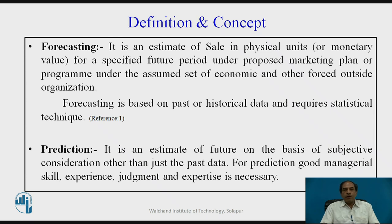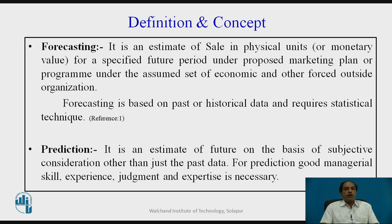The definition means we are trying to estimate sales for the future, either in monetary value or in specific units. A specified future period may be one month or three months. Generally, up to one year is called short-term forecasting, one to three years is medium-term, and beyond three years is long-term forecasting. Forecast accuracy is closely related to future data, and the assumed set of economic and other conditions may not actually behave as expected, which can directly affect forecasting accuracy.